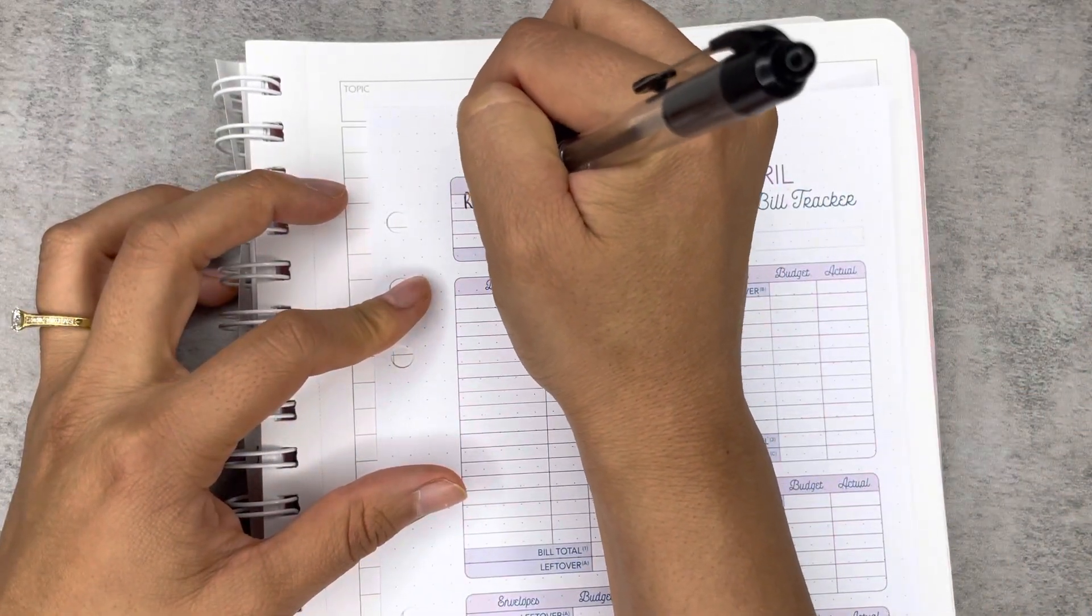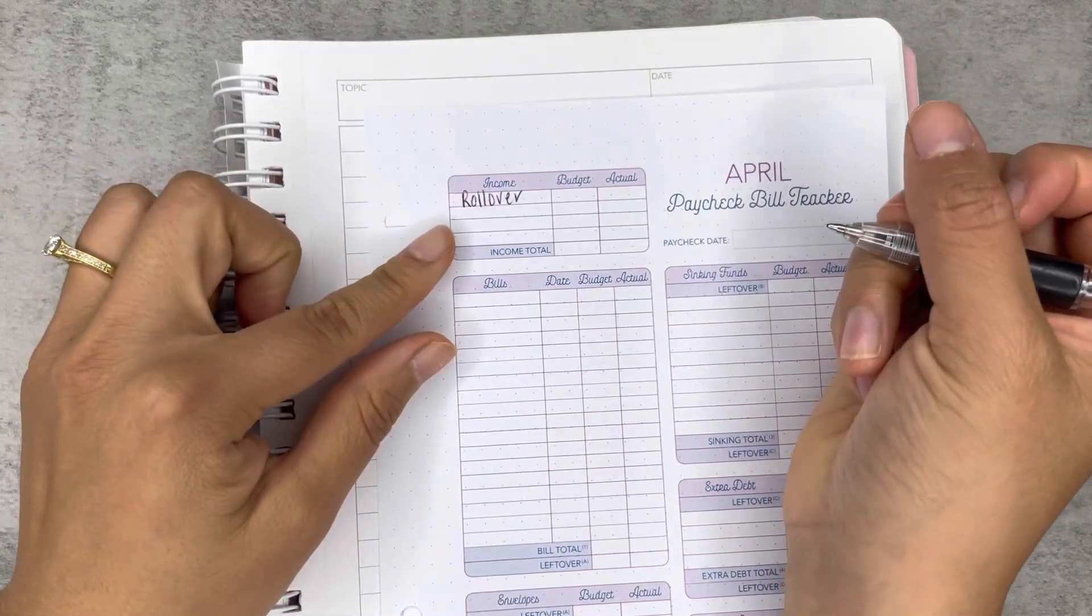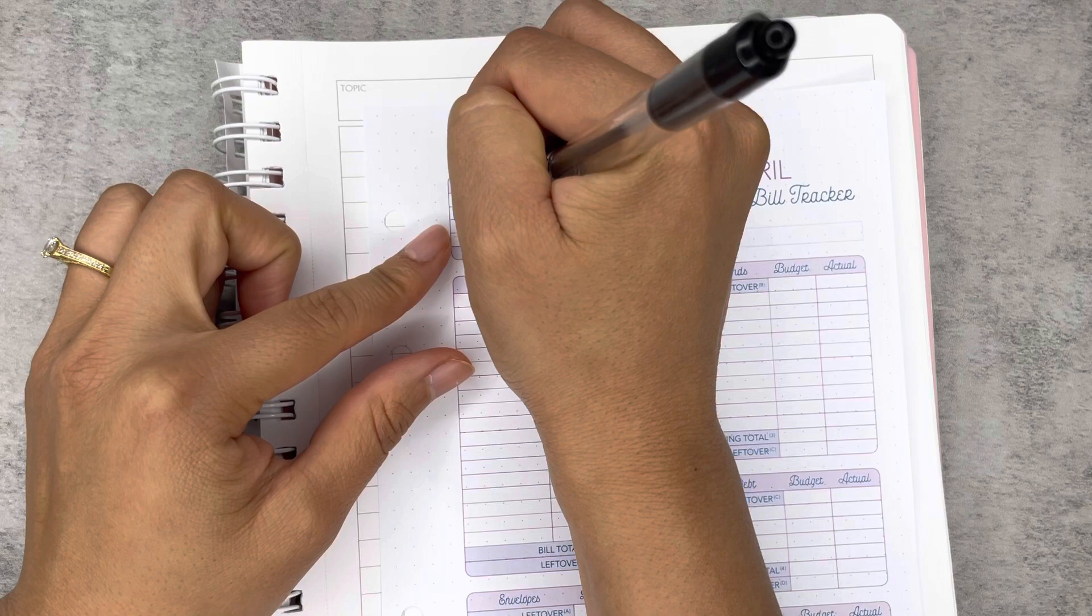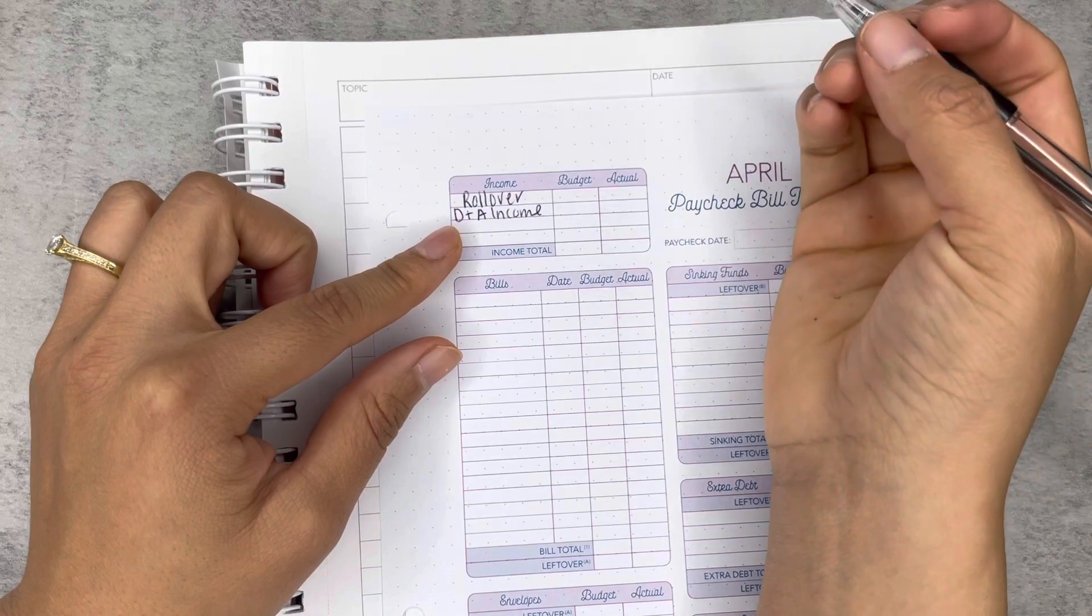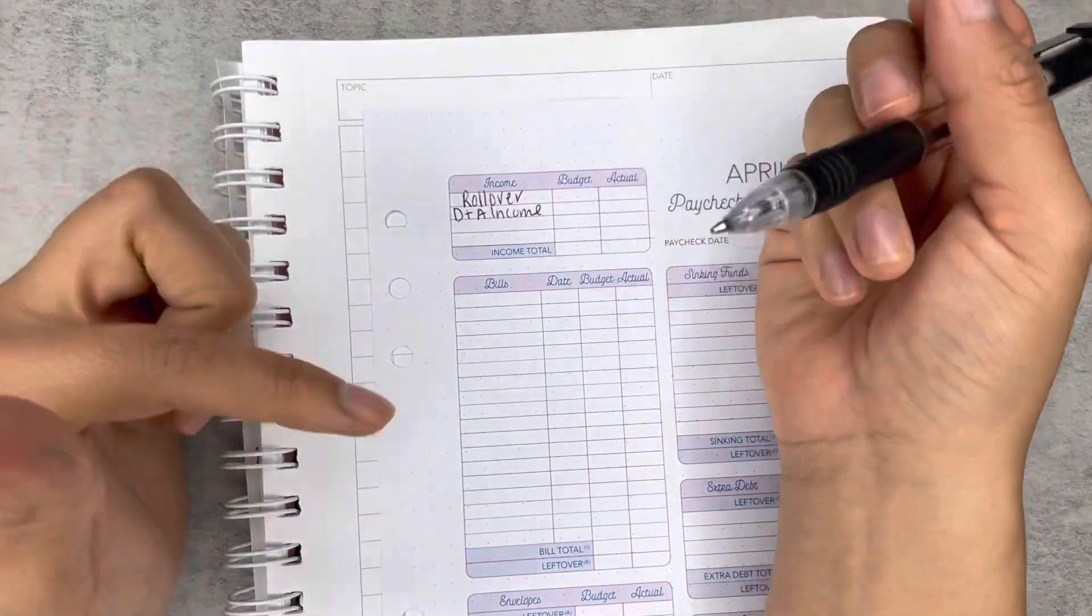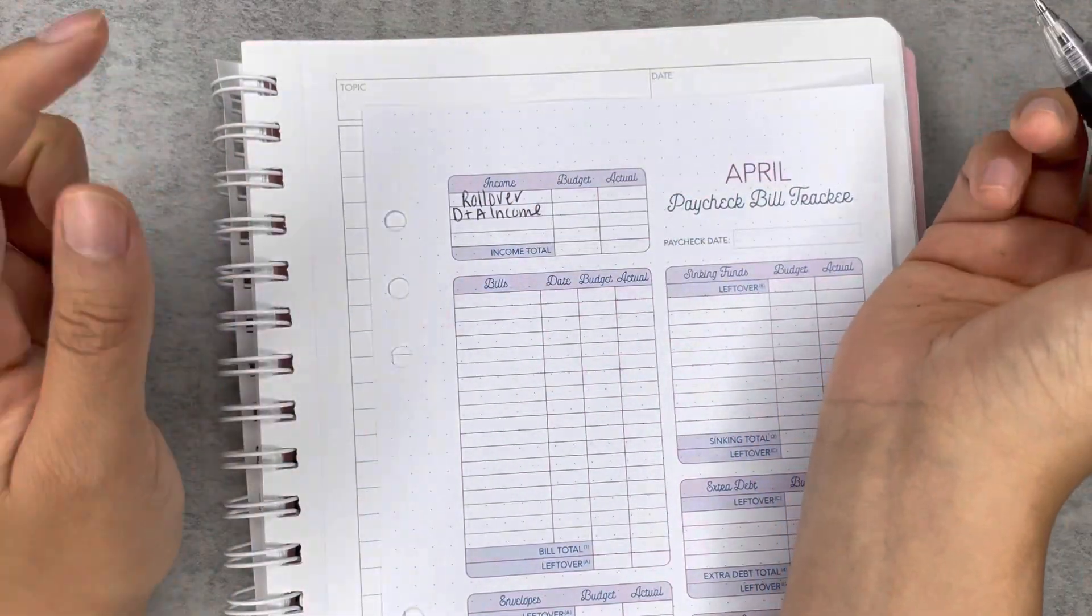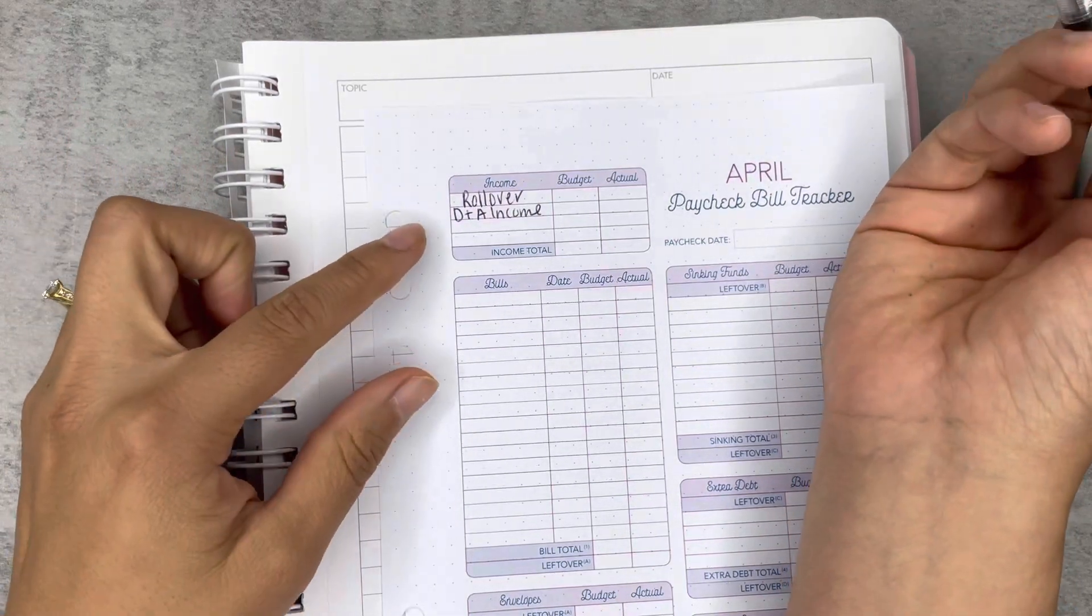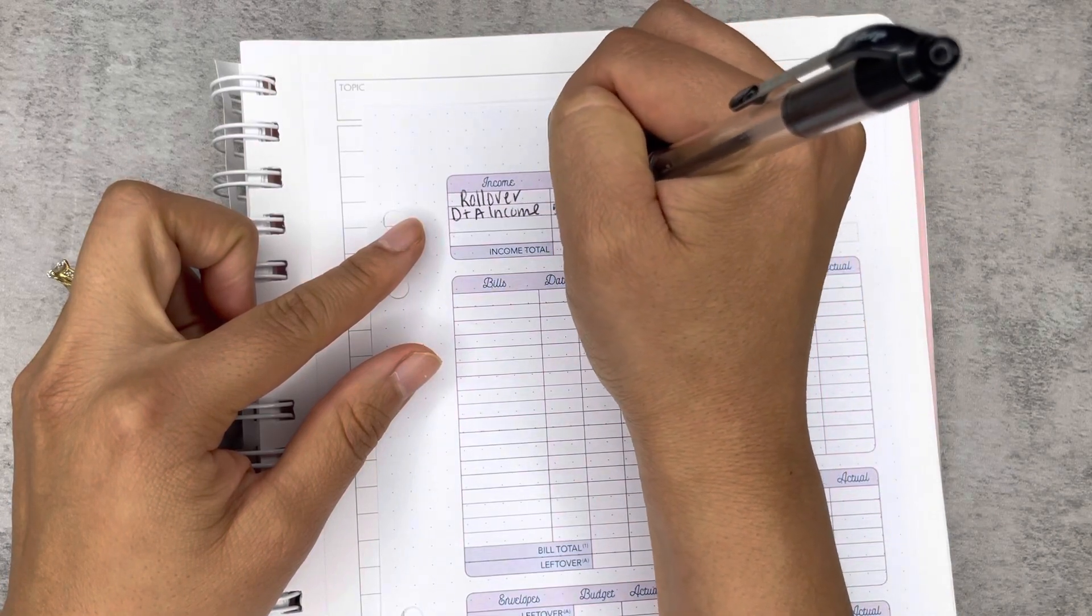There's usually a rollover amount but I won't know that until probably Monday. And then I'm going to put D and A income. I'm going to combine our incomes into one line just because I don't think it matters how much I bring, how much my husband brings. At the end of the day, we all put our eggs in the same basket. In terms of income, we're going to go ahead and budget another $5,000 for April.